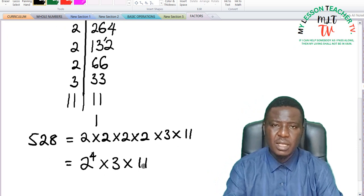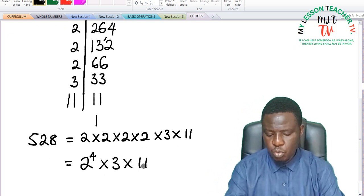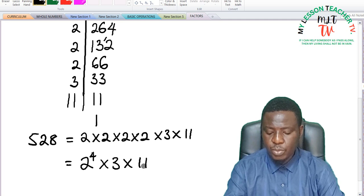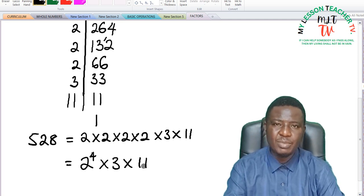So 528, being expressed as a multiple of its prime factors, is 2 raised to the power of 4 times 3 times 11.